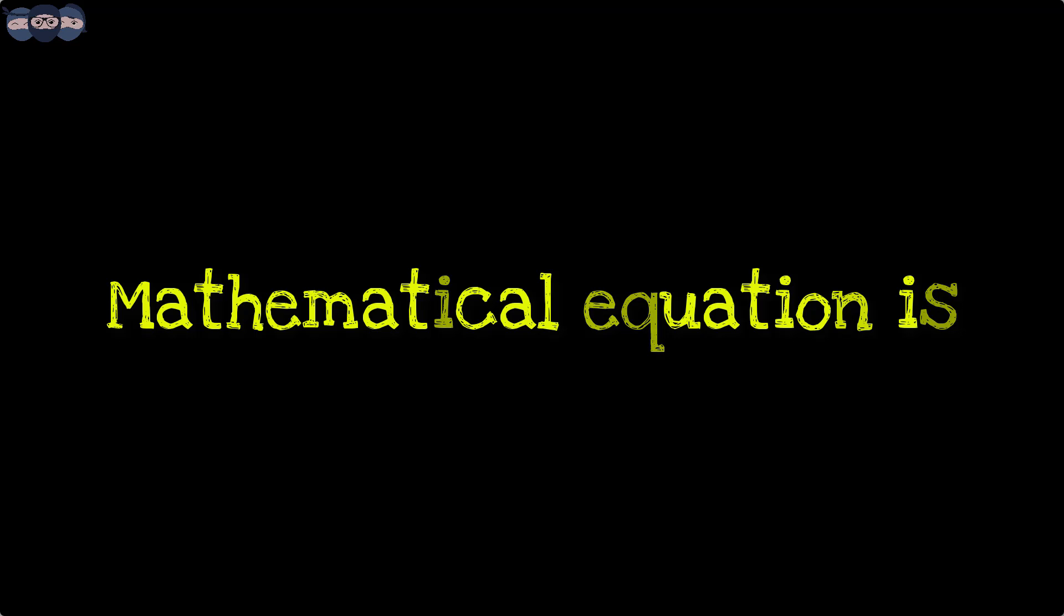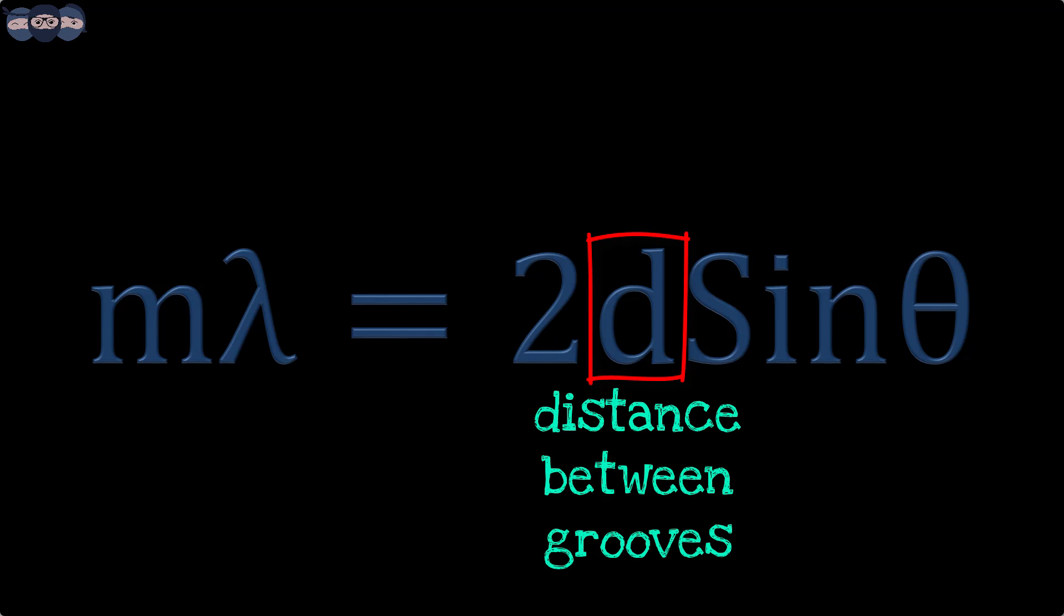The wavelength that can be obtained is given by the mathematical expression mλ equals 2d sinθ. For a fixed set of grooves with a separation distance of d, one can get the wavelength by rotating the grooved surface, i.e., by changing the angle θ perceived by the light.